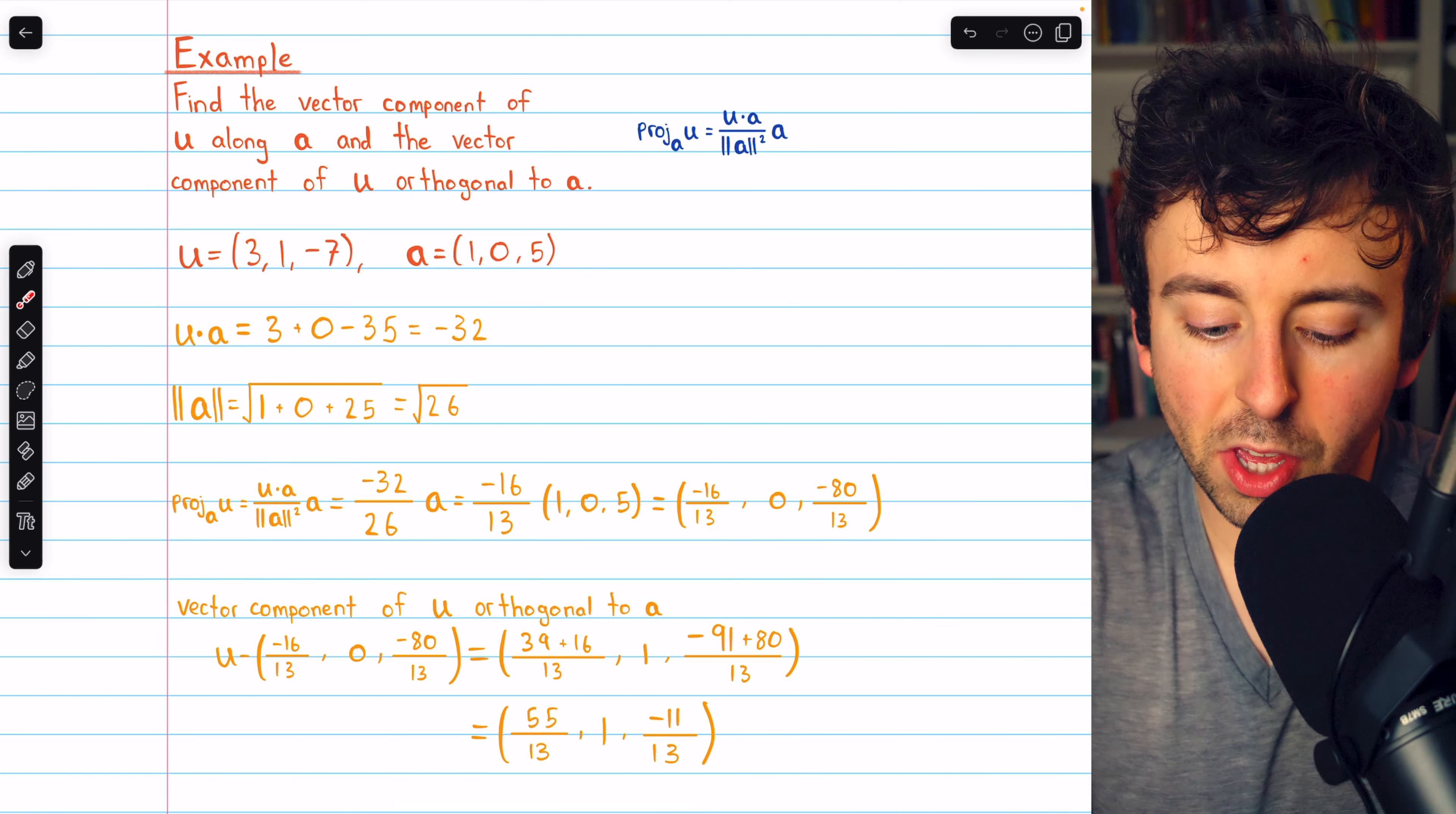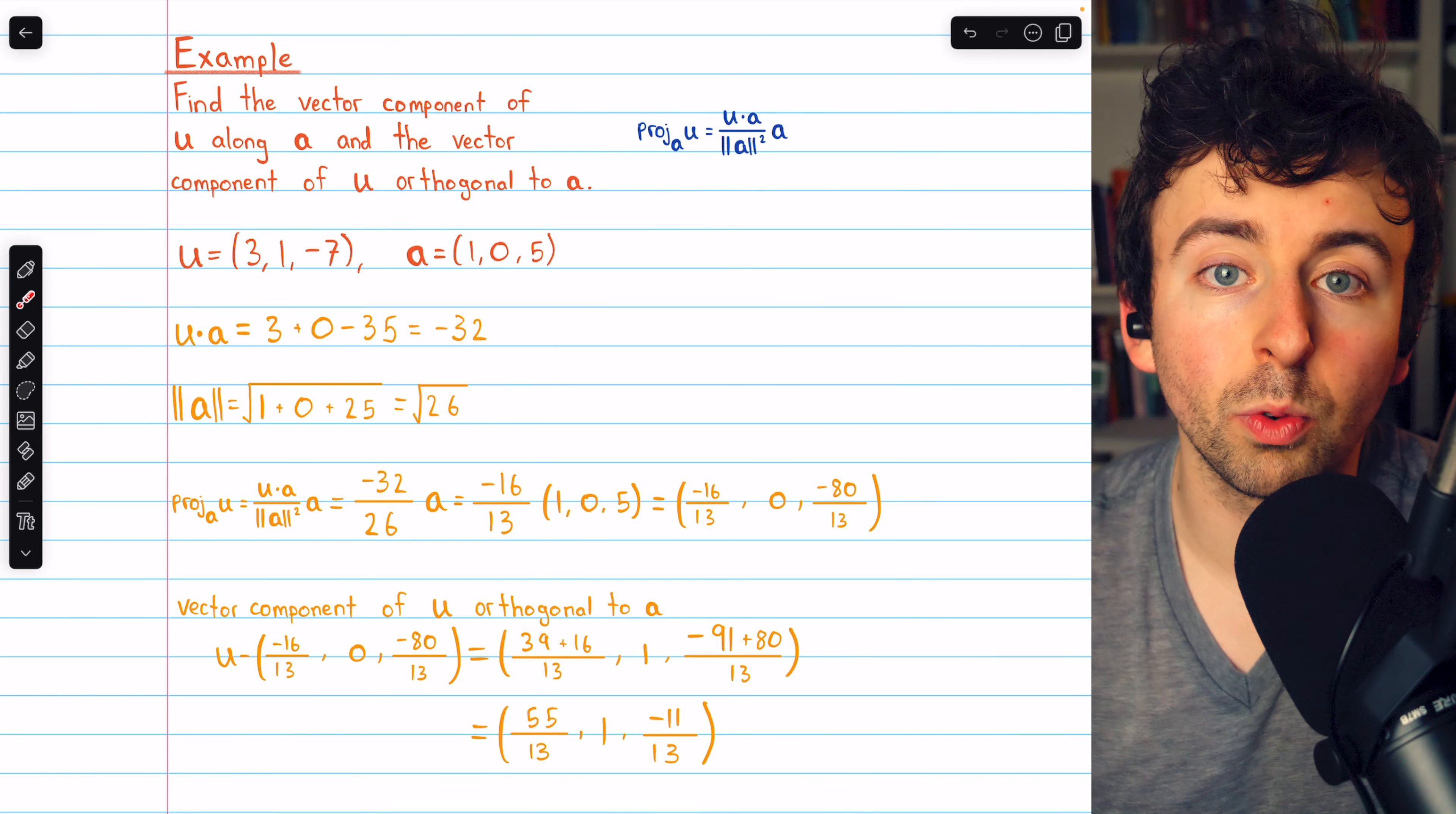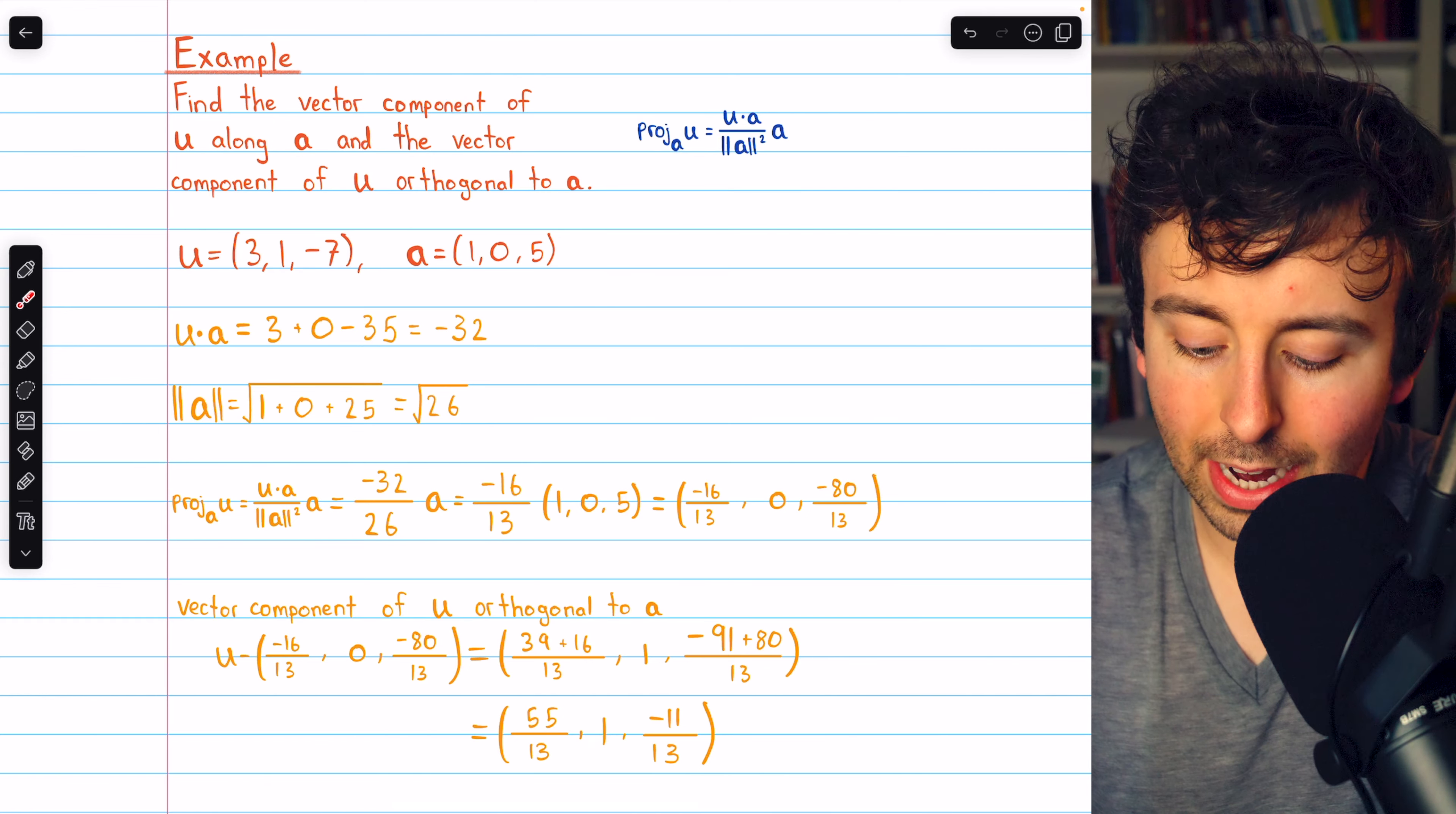Subtract the projection of u on a from u, and that will give us whatever's left, which will be orthogonal to a. The first component of u is 3, so the first component of this difference is 39 over 13 plus 16 over 13. The second component of u is 1, so the second component of this difference is 1 minus 0, which is just 1. The third component of u is negative 7, which is negative 91 over 13. But we're subtracting the third component of the projection, so we actually end up adding 80 over 13. This turns out to be 55 over 13, 1, negative 11 over 13. This is the vector component of u orthogonal to a.